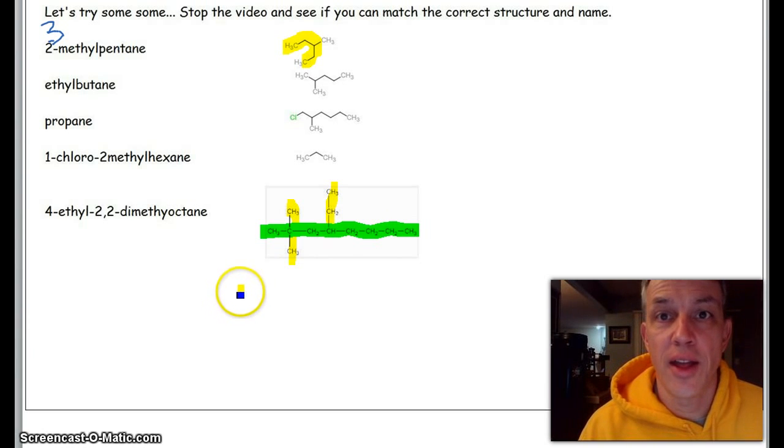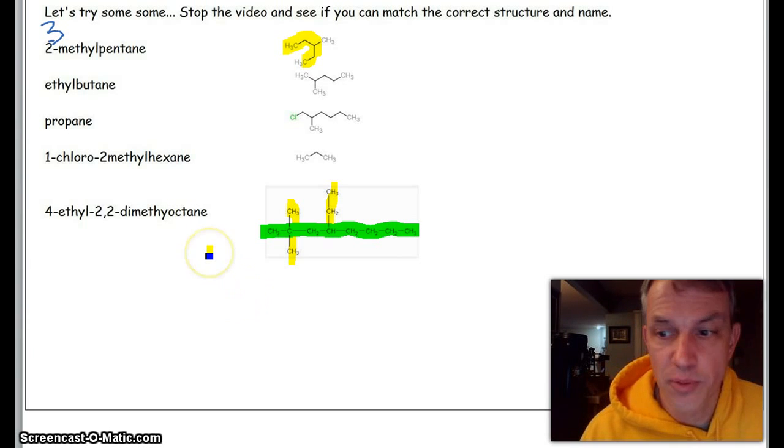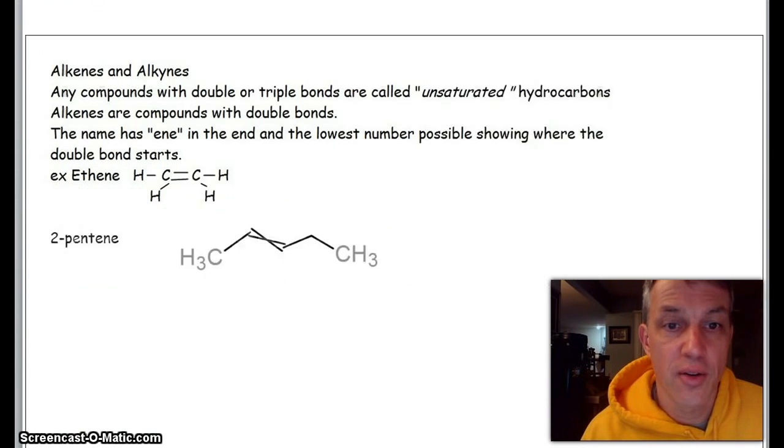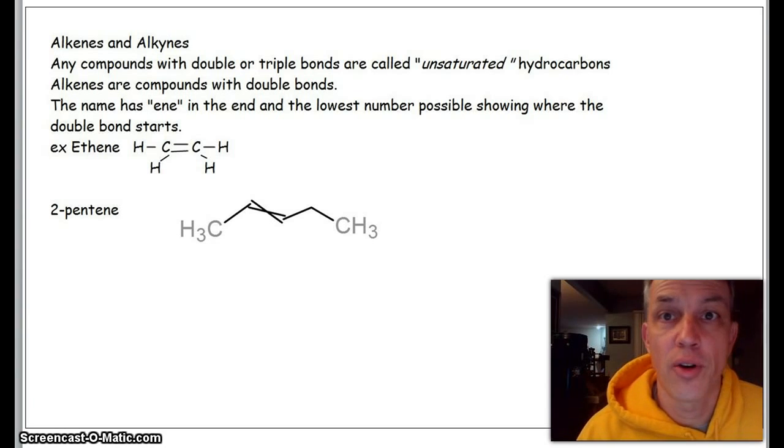Okay, so if you're back quickly, let's take a look at alkenes and alkynes. Sometimes we have what are called unsaturated hydrocarbons.